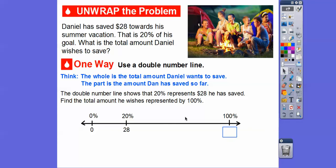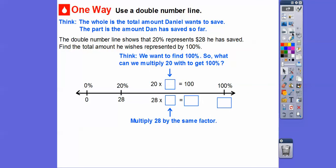What we're going to do is find the total amount he wishes to save that represents the 100 percent. So think, we've got to make this 20 percent into 100. So what can we multiply the 20 with to get 100? So 20 times what equals 100?